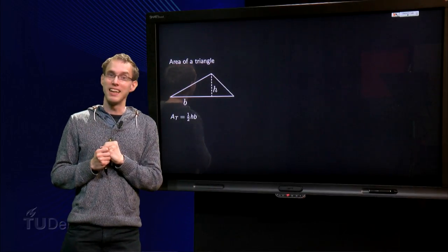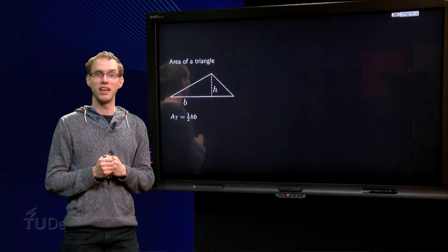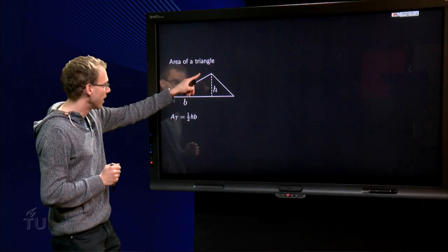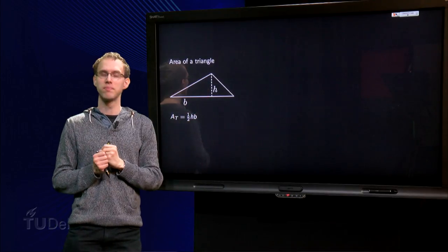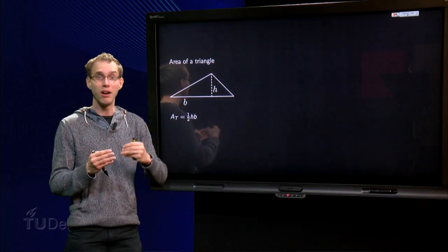We will look at the area of a triangle. Ok, you know what the area of a triangle is, equals one-half times the height times the base. So that is the area of a triangle. But why? How do you prove this?